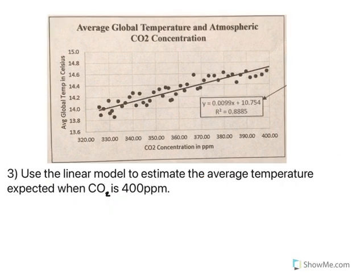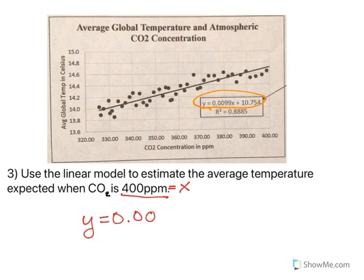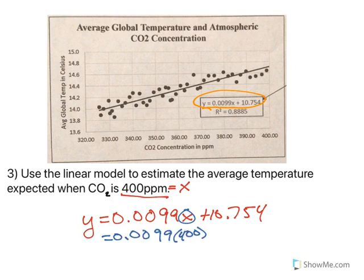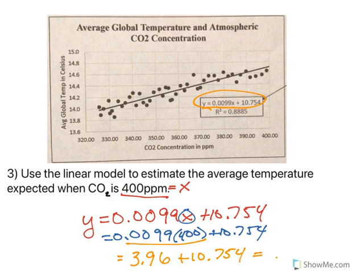Let's use the linear model — y equals 0.0099x plus 10.754 — to estimate the average temperature expected when the CO2 is 400 parts per million. The parts per million is x, so x equals 400. Substituting into the equation: 0.0099 times 400 plus 10.754. Order of operations tells me to multiply first, so 0.0099 times 400 gives 3.96, and then adding 10.754 gives 14.714 degrees Celsius.